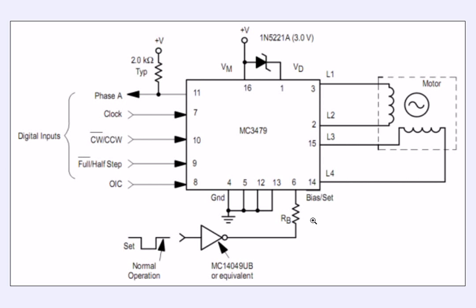What is nice about it is if you leave it high, you shut the device off totally. But if you ground it, then it will operate. So you can use the bias set to control both the output current on the coils and to shut the output on and off completely if you want to.